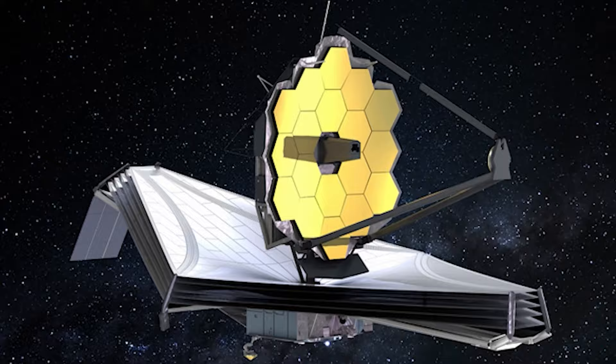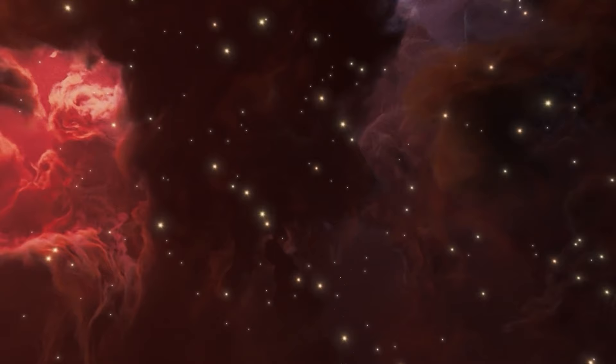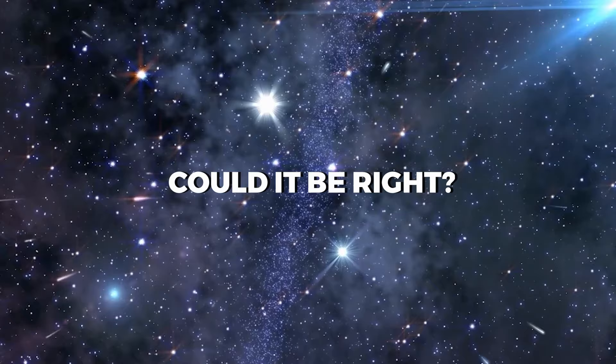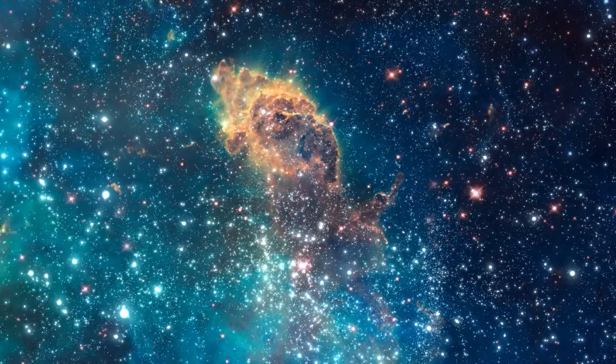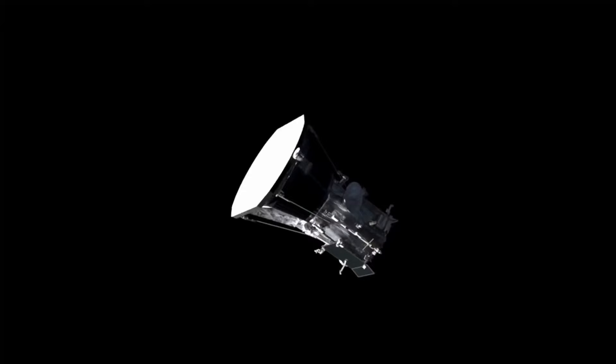Despite the advancements made by using this technology, such as the accurate depiction of the formation of celestial bodies, Flamingo still fell short of explaining the observed weak clumping of matter in the universe presently. In other words, it couldn't resolve the main purpose it was created for, to help solve the S-8 tension. Or could it be right? Could it possibly mean that our standard model of cosmology is wrong and we haven't known all this while?